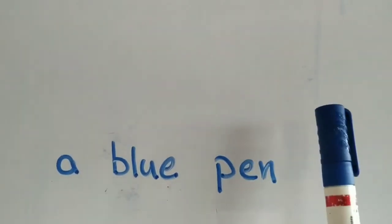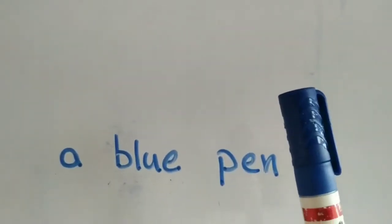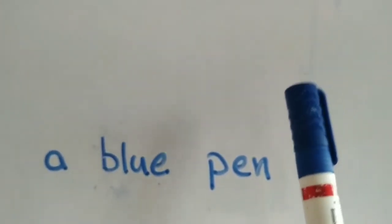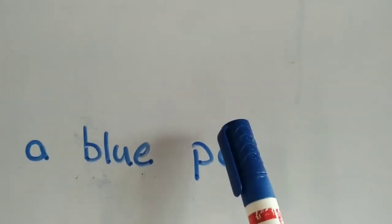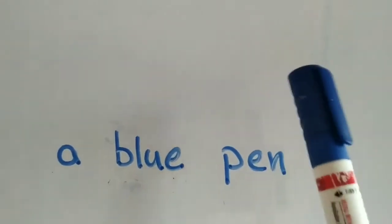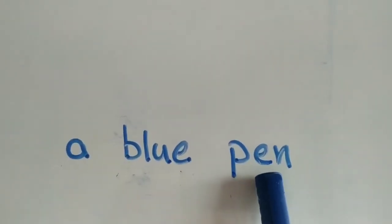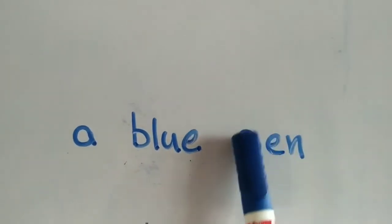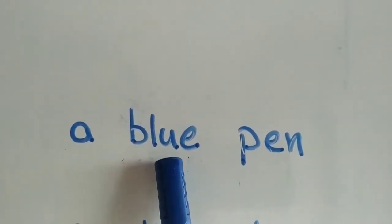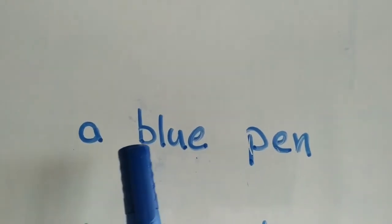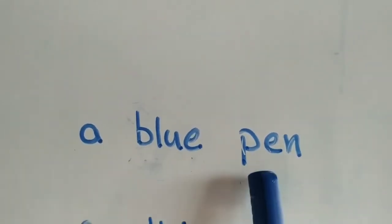Now, look at this pen. I have got a blue pen. So, pen is what? I am talking about a noun — a thing, a naming word. Pen is a naming word. I am talking about the pen which is blue in color. So, a blue pen.